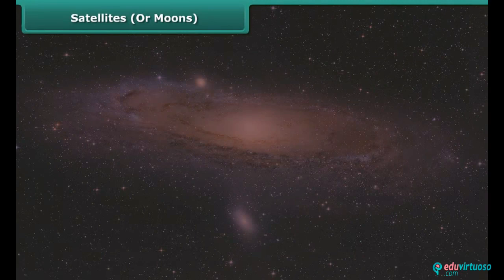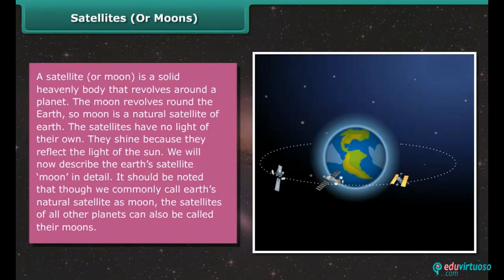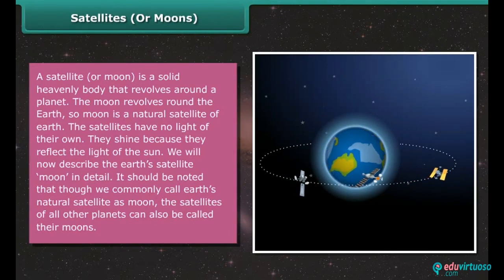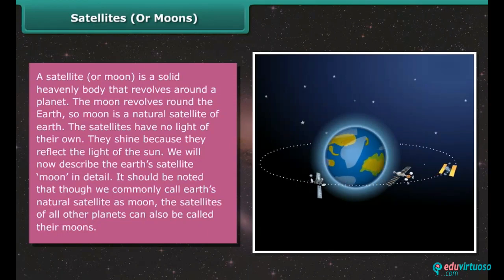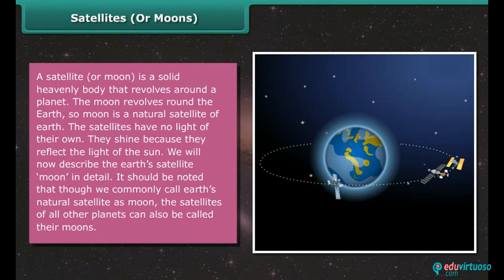Satellites or moons. A satellite or moon is a solid heavenly body that revolves around a planet. The moon revolves around the earth, so moon is a natural satellite of earth. The satellites have no light of their own. They shine because they reflect the light of the sun. It should be noted that though we commonly call earth's natural satellite as moon, the satellites of all other planets can also be called their moons.